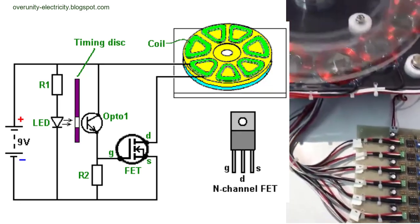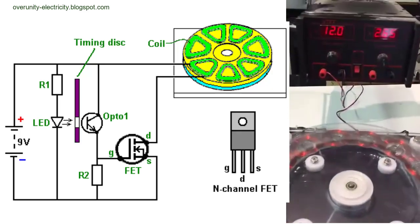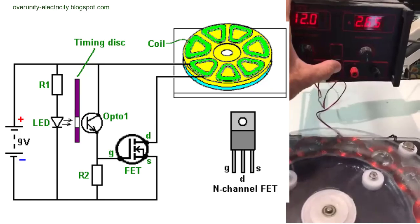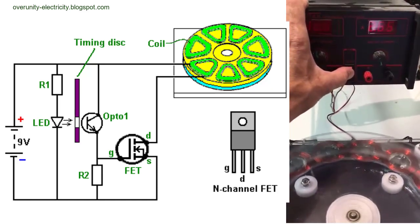By carefully timing the interruption of the circuit, Flynn's generator maximizes the energy extracted from the collapsing magnetic field. This method effectively sidesteps Lenz's Law, which normally opposes the motion that creates the magnetic field, allowing for the capture of high energy pulses.